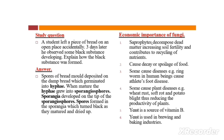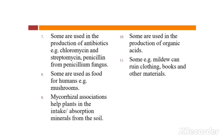Number six: yeast is used in brewing and baking industries. Number seven: some are used in the production of antibiotics — for example, chloromycin, streptomycin, and penicillin from the Penicillium fungus.